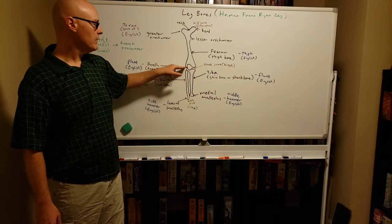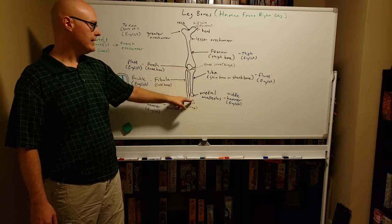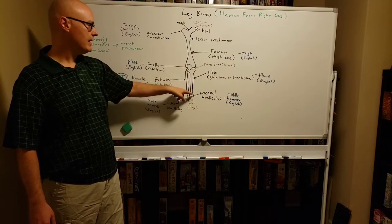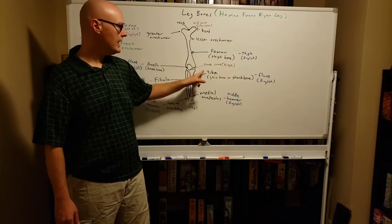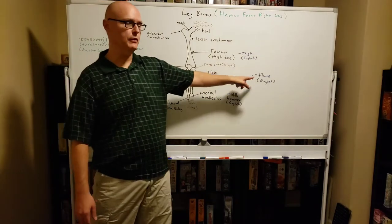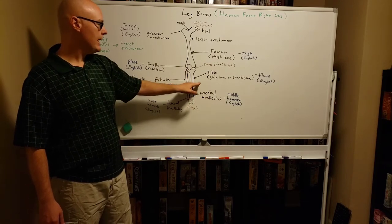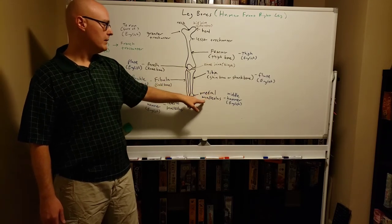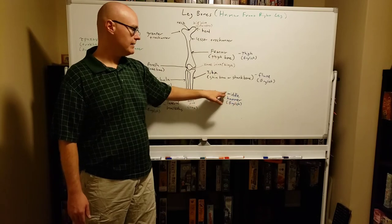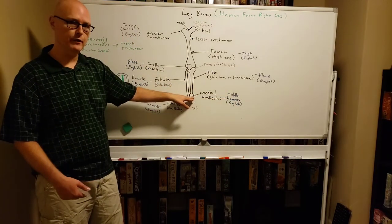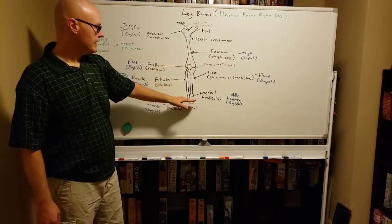Below the femur and the patella, we have two bones — one on the inside and one on the outside. The one on the inside is called the tibia, the shin bone or shank bone. The direct translation from Latin to English is 'flute,' and it looks kind of like a flute. It is the load-bearing portion of the lower leg. The bottom of the tibia is the medial malleolus, which translates directly from Latin to English as 'the middle hammer,' and this is the part that protrudes on the foot — you'll see this when you look at your leg. This is connected to the ankle joint, which is a hinge type joint.